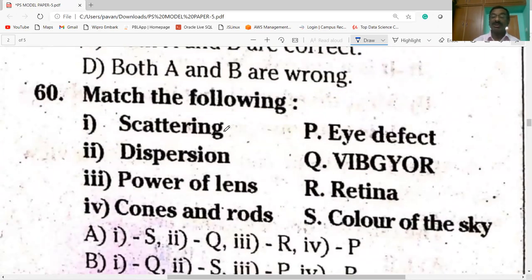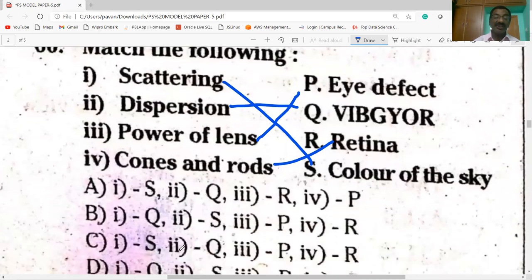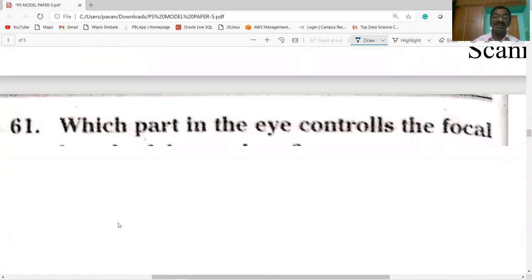Next question. Scattering - color of the sky. Dispersion - splitting of white light, rainbow. Power of lens - eye defect, the cones and rods. So the option is C.